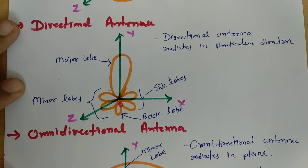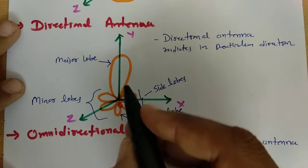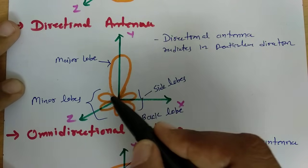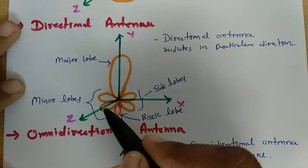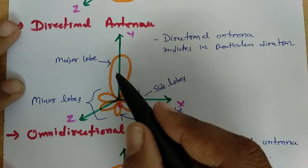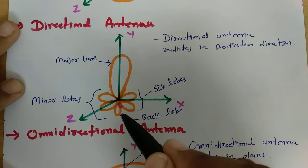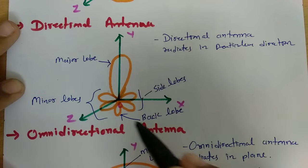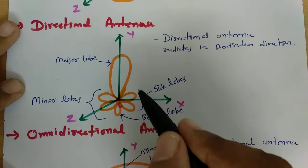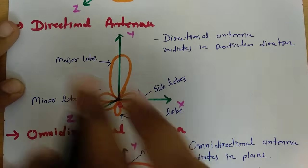When we talk about directional antenna, it radiates maximum in a particular direction. One can see the directional antenna radiation pattern where the major radiation is associated with the major lobe, and other than the major lobe are minor lobes. The lobe with maximum radiation is considered the major lobe. Exactly opposite to the major lobe is referred to as the back lobe, and other than the major lobe and back lobe are considered side lobes.